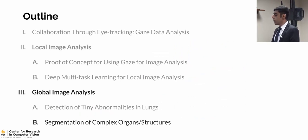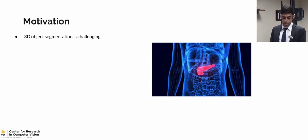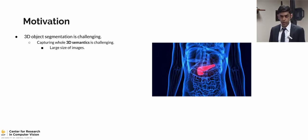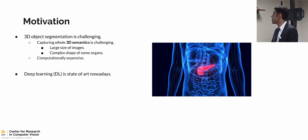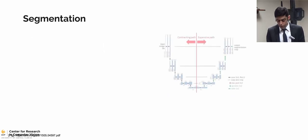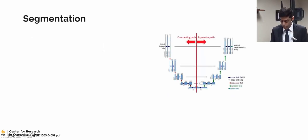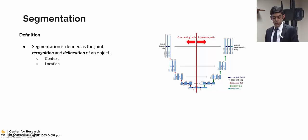Moving to the last chapter — segmentation of complex organs and structures. This content has been recently accepted for publication in MICCAI 2019. The motivation: 3D object segmentation is challenging because capturing 3D semantics is difficult due to the large image sizes — it's impossible to have a whole 3D image in the GPU, even with batch size of one, to capture the whole 3D semantics. Also, the complex shapes of organs make the problem computationally nearly impossible. Deep learning is currently the state-of-the-art for semantic segmentation, but current methods are sub-optimal in capturing these 3D semantics. Segmentation can be modeled as joint recognition and delineation — capturing context and location. However, in deep learning, segmentation is modeled as pixel-level classification, missing the location and relation between pixels. The state-of-the-art cross-entropy loss is a pixel-level loss not accounting for relations between objects.